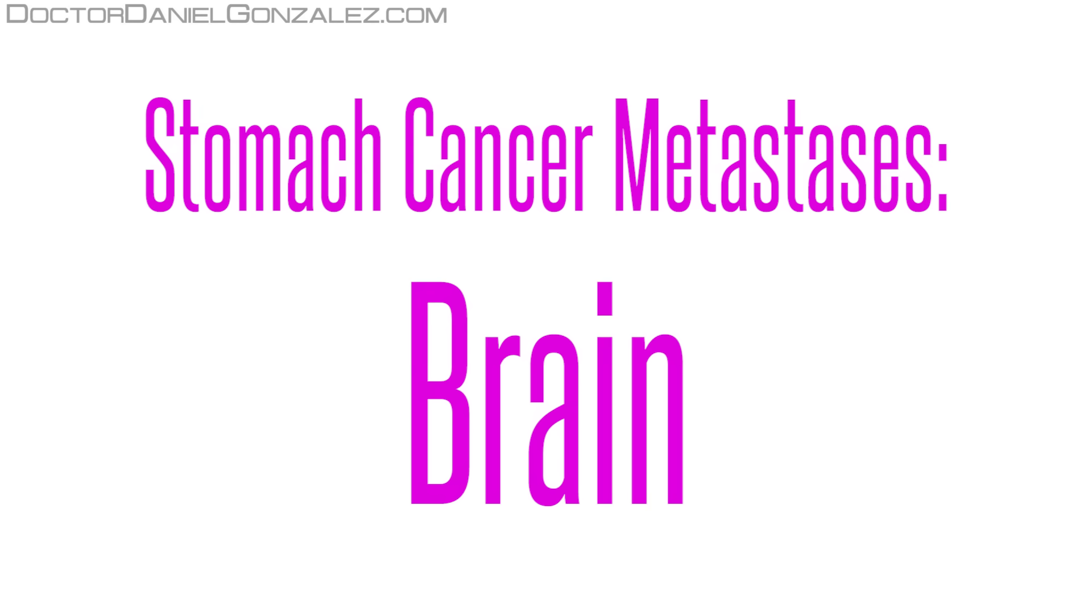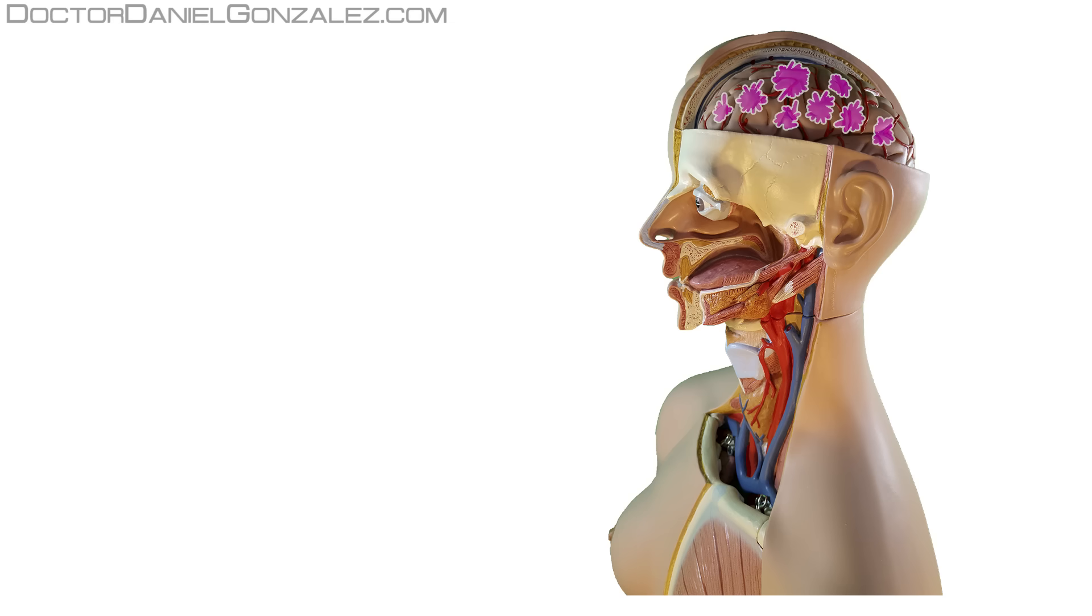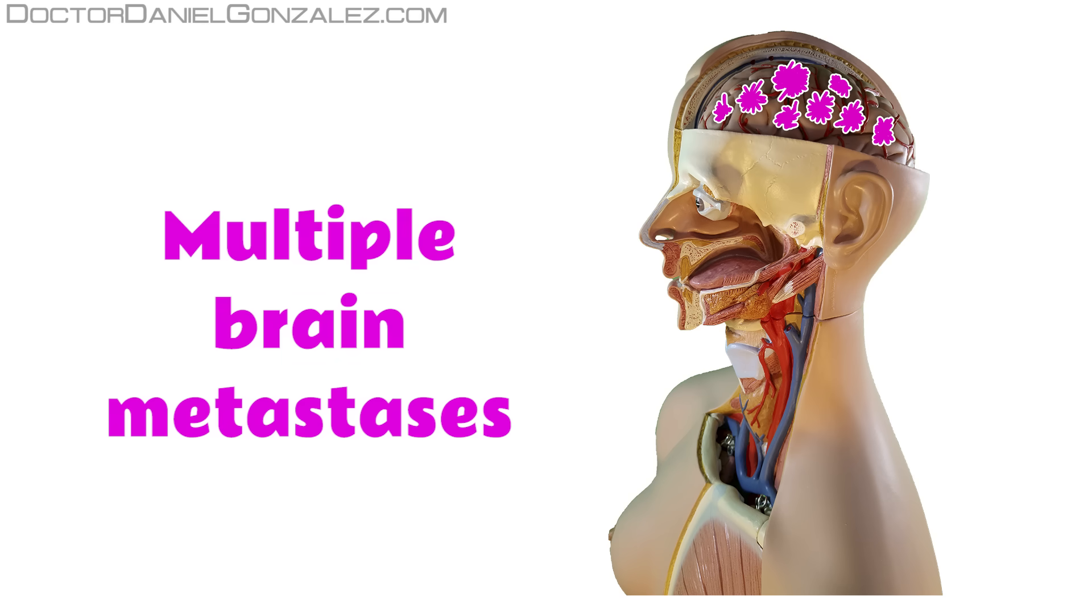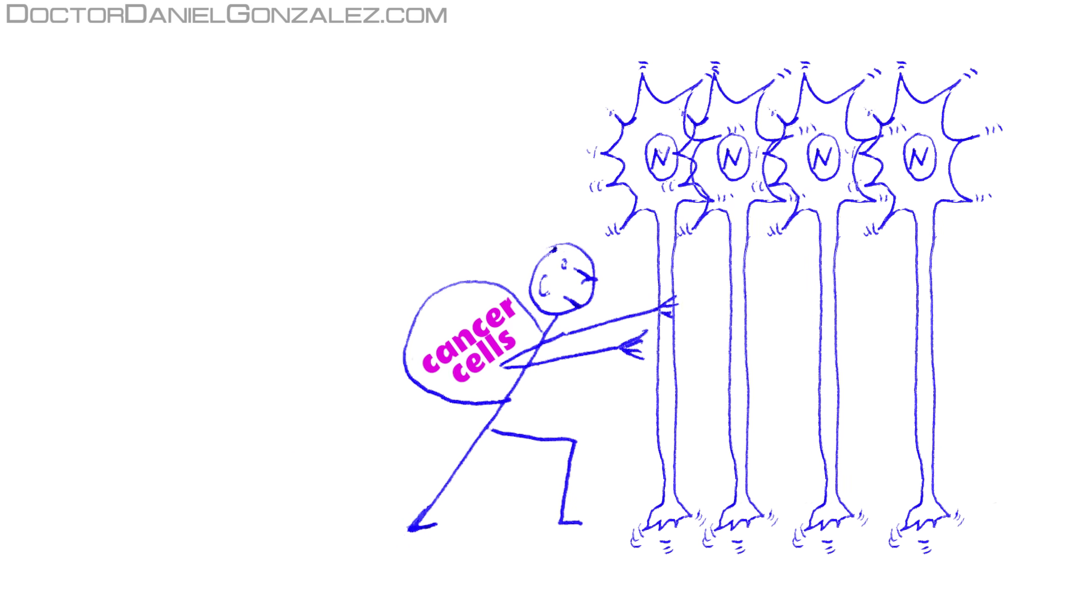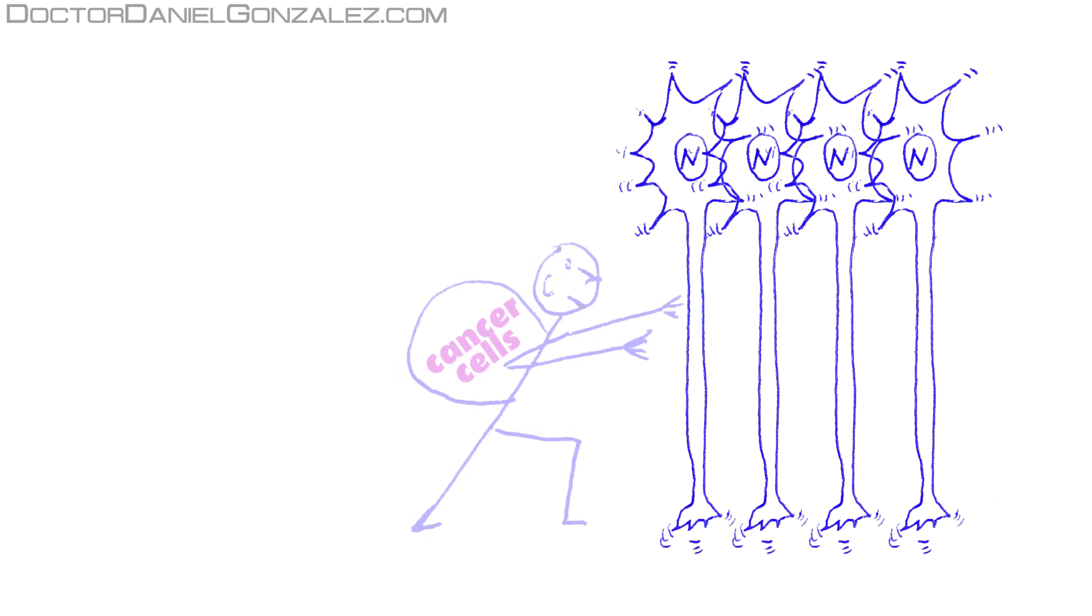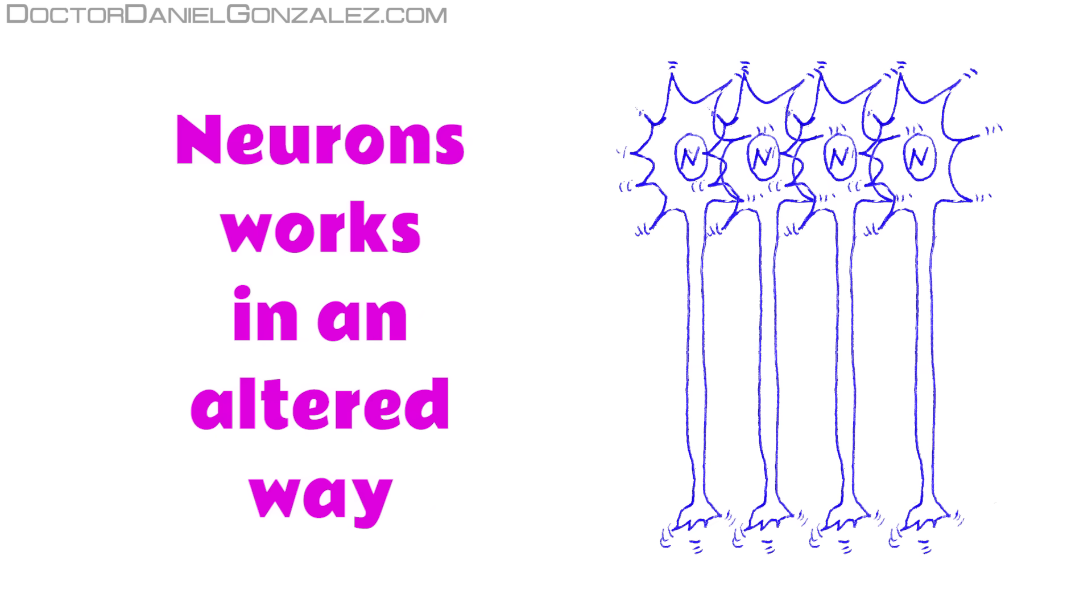Brain metastasis. When groups of tumor cells start growing within the brain, they can form metastasis that will become increasingly large. By pushing neighboring neurons, these neurons begin to function in an altered way, and therefore two types of symptoms may occur.